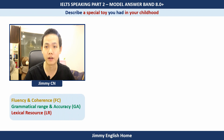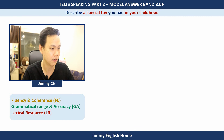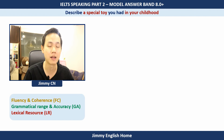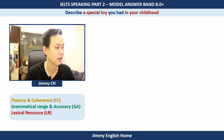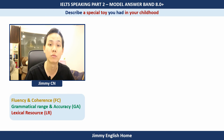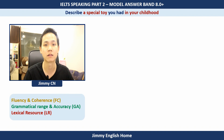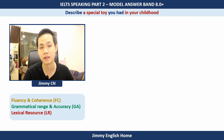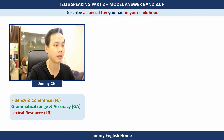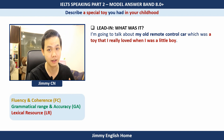Now let's go through the model answer and analyze it sentence by sentence, looking at vocabulary and grammar. Here are the IELTS speaking scoring criteria: first, Fluency and Coherence — whether you speak smoothly without hesitation and whether your speech sounds logical; second, Grammatical Range and Accuracy — the variety of grammar structures you use and how accurately you use them; third, Lexical Resource — the vocabulary you use in your speech. The fourth criterion is Pronunciation, but since this is a written analysis, I'll focus on the first three.